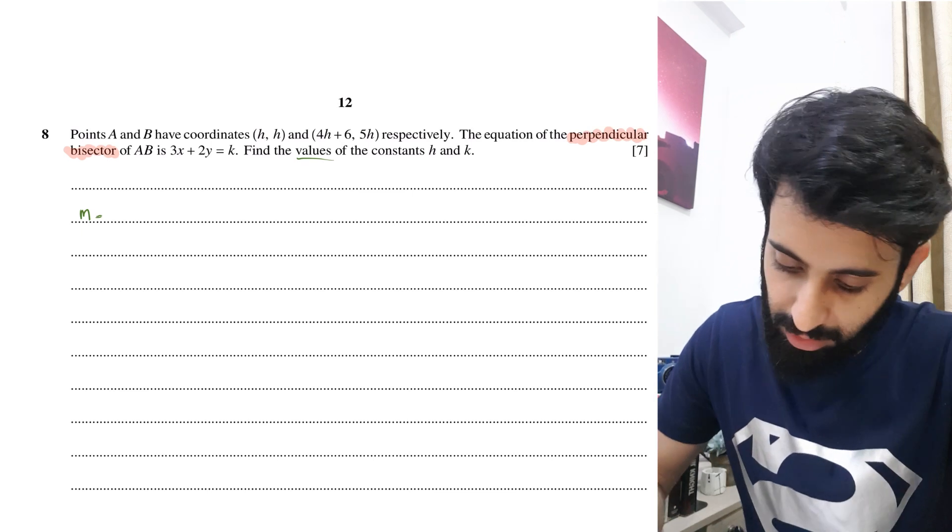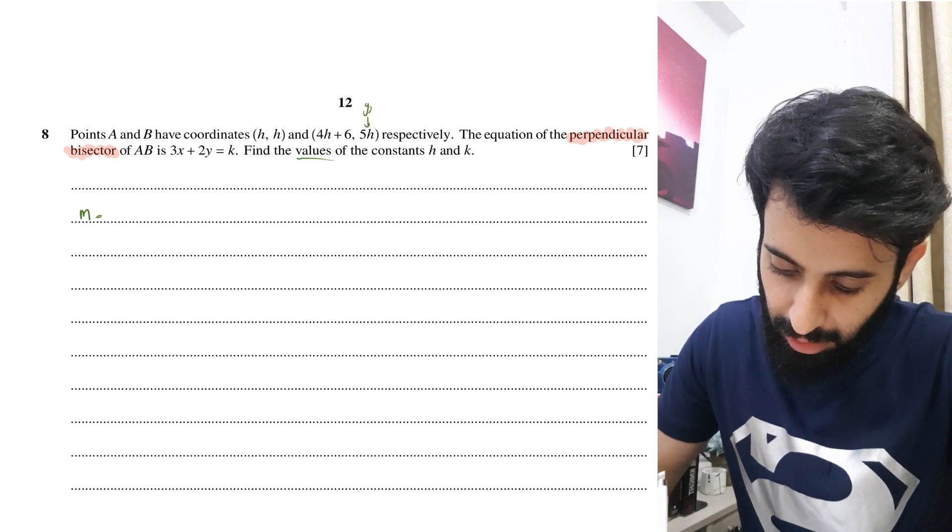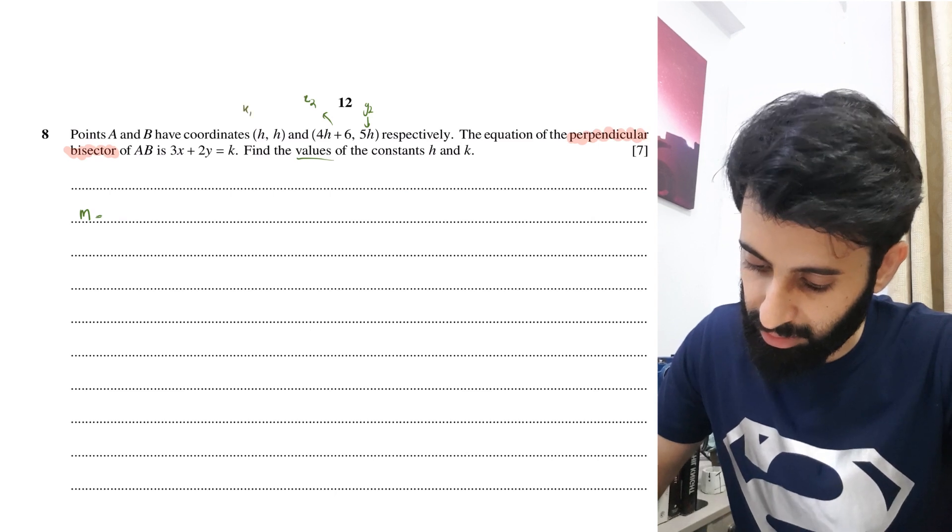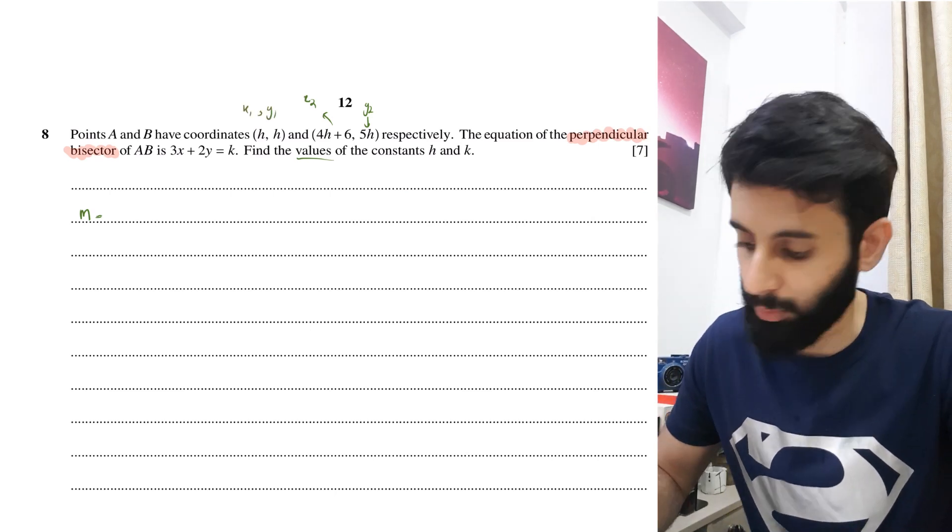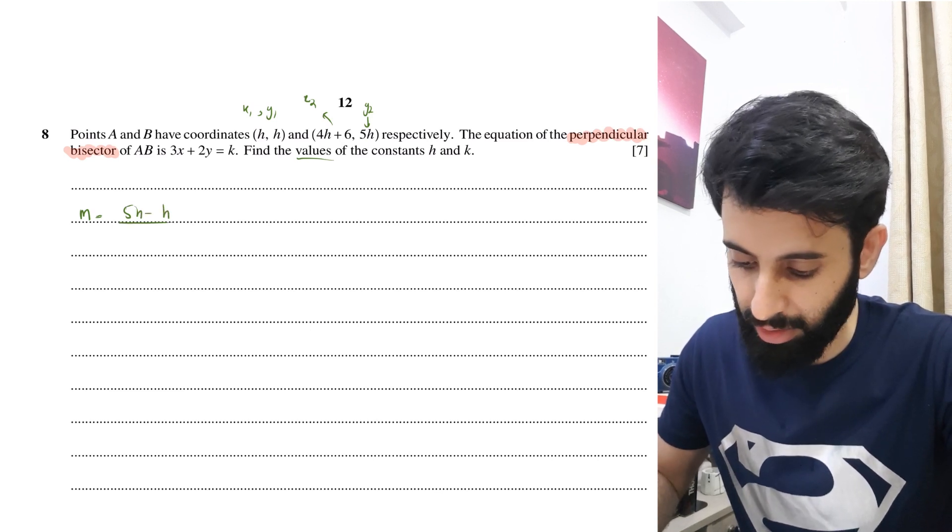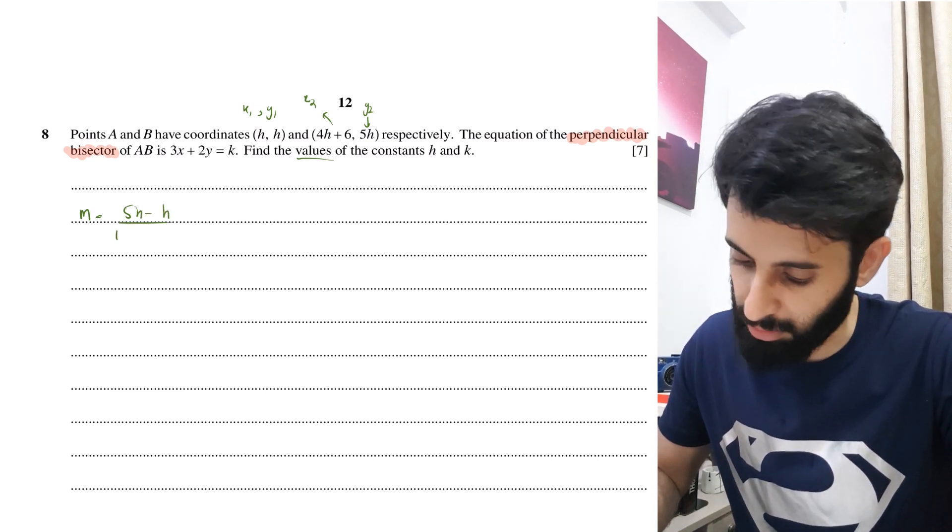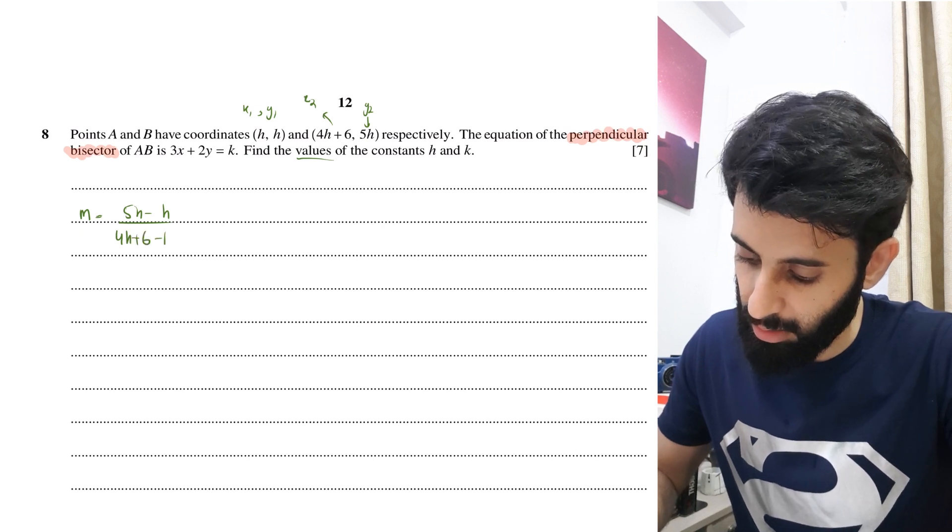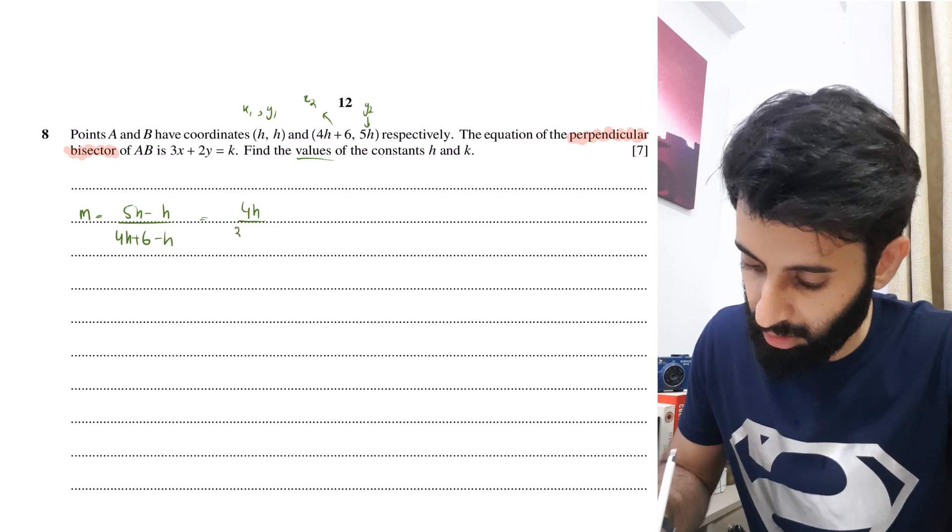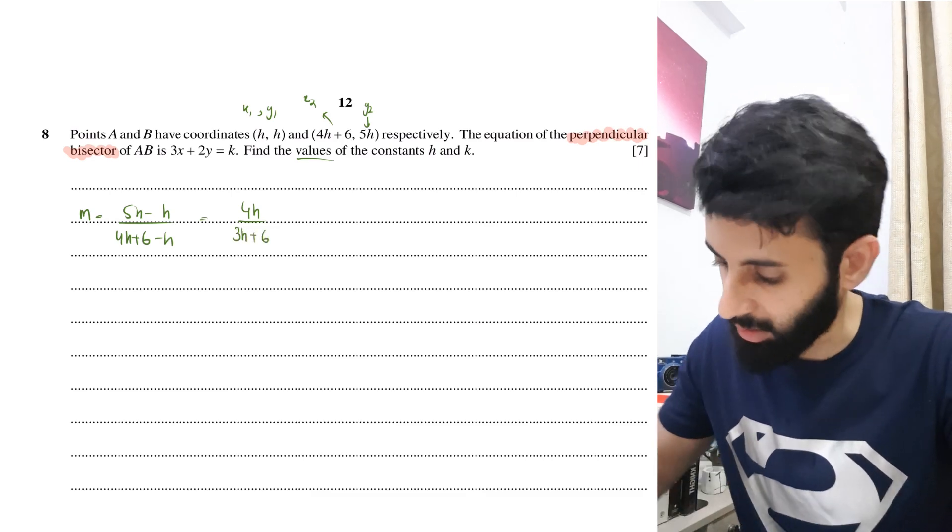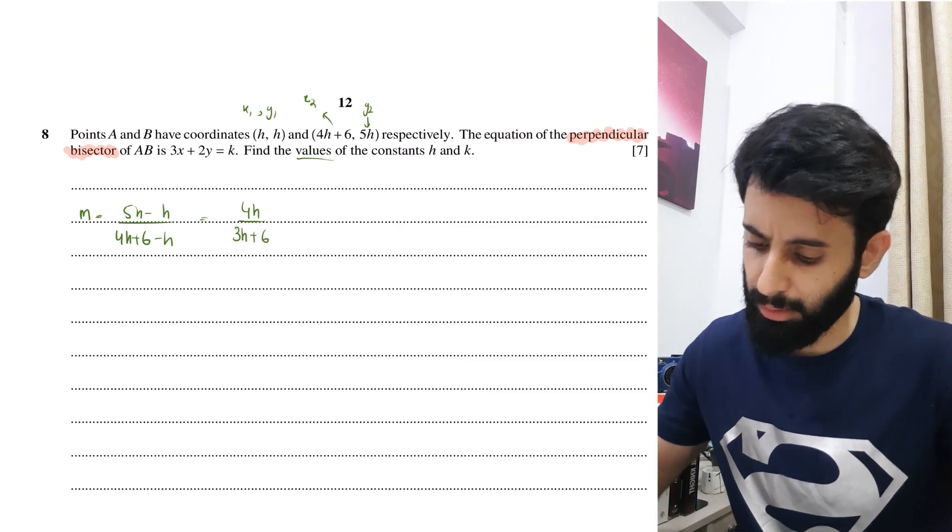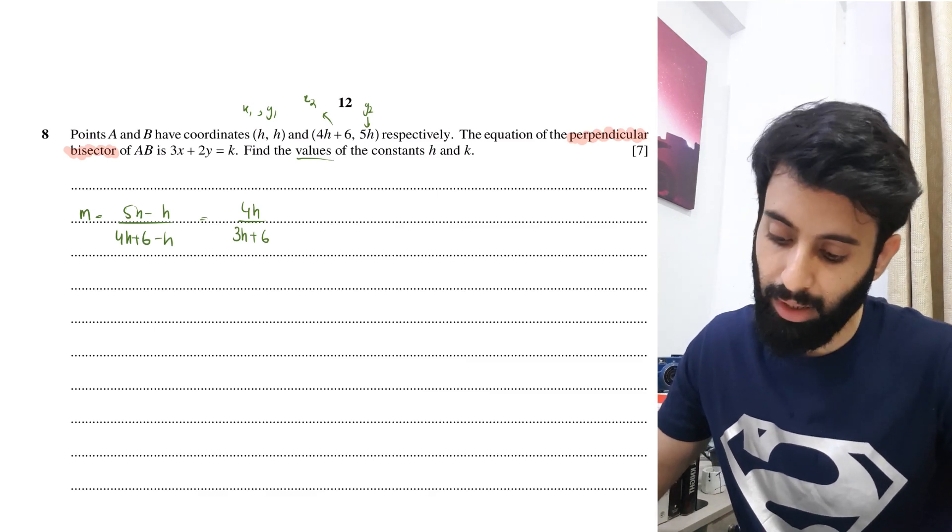So, 5h is basically y2 and 4h plus 6 is x2, which means we can consider h and h as x1, y1. So, we do y2 minus y1, that means 5h minus h, and divide it by x2 minus x1, which means 4h plus 6 minus h. So what do we end up with? We end up with 4h upon 3h plus 6, and there's nothing really that we can simplify here, so we'll just leave it as it is. Now, remember, this is the gradient of AB.